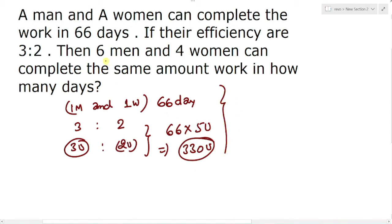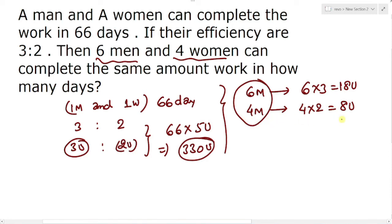Now in the second case it is given that six men and four women are working. So what would be the combined efficiency of one day? If you take six men, efficiency of six men would be nothing but six into three, that implies 18 units. And what would be the efficiency of four women? It should be simply four into two, that implies eight units. And the combined efficiency of these two will be 26 units per day.